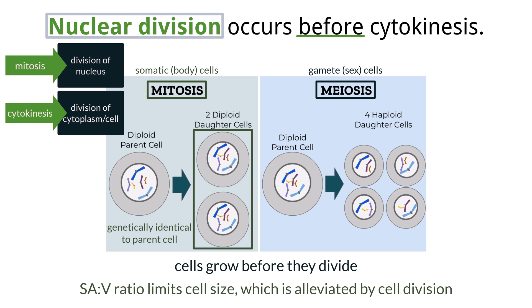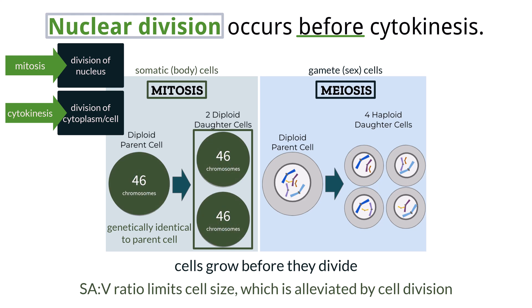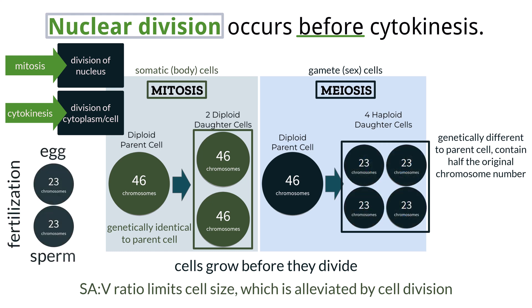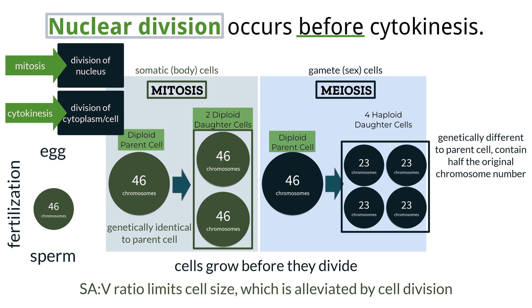Mitosis results in the production of two daughter cells that are genetically identical to the parent, with each daughter cell having the same genome as the parent, as all genetic information is preserved. Meiosis is the process that occurs in gametes, or sex cells. It is very important that each egg and sperm have half of the genetic material — in humans, that is 23 chromosomes. During fertilization, the egg has 23 chromosomes and the sperm has 23 chromosomes, with the resulting zygote having 46, the defining number of chromosomes in a human. Diploid describes a cell that has all the required DNA, while haploid describes a cell that has half the required DNA. Somatic cells are diploid and during mitosis produce diploid cells, while meiosis produces haploid cells.